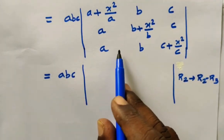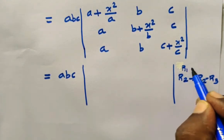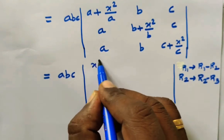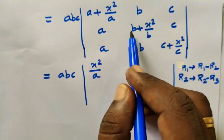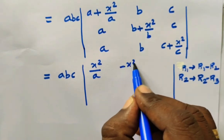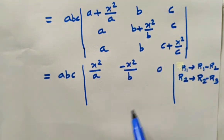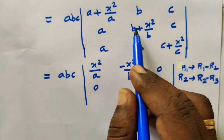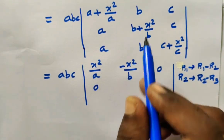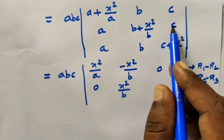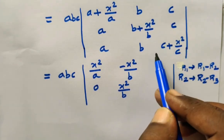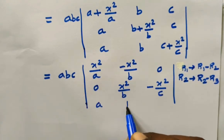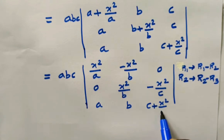Now reducing the determinant using elementary transformations. R1 can be written as R1 minus R2: A cancels, remaining is x squared divided by A. B minus B cancels, remaining is minus x squared divided by B. C minus C gives 0. R2 is written as R2 minus R3: A minus A gives 0. B plus x squared divided by B minus B — BB cancels, remaining x squared divided by B. C minus (C plus x squared divided by C) — CC cancels, remaining minus x squared divided by C. R3 remains: A, B, C plus x squared divided by C.